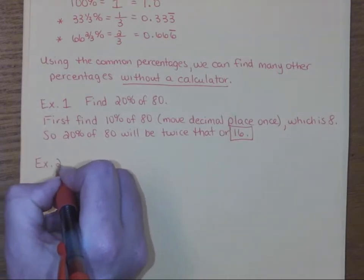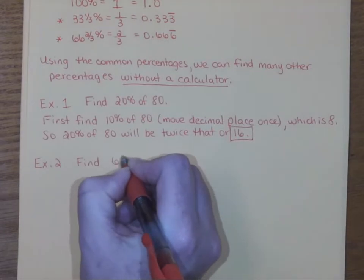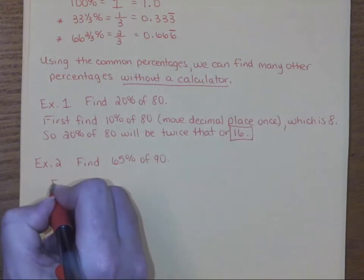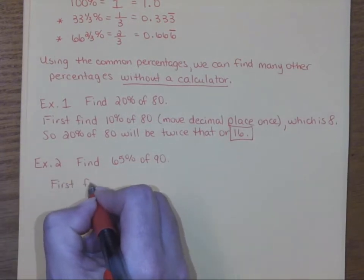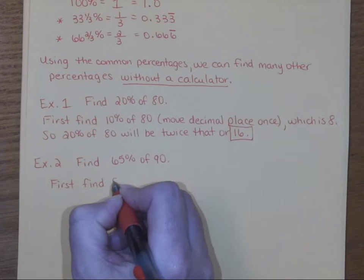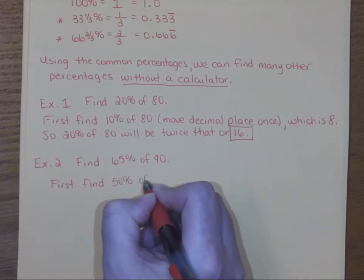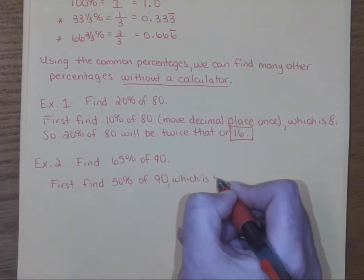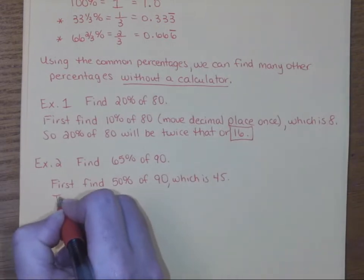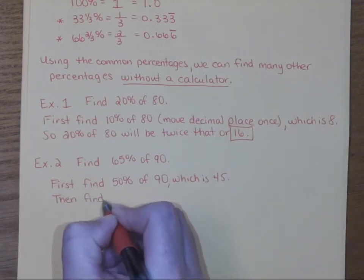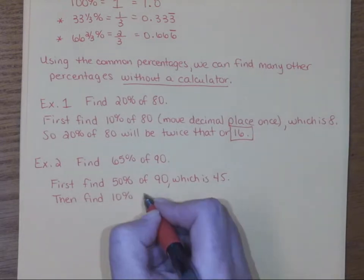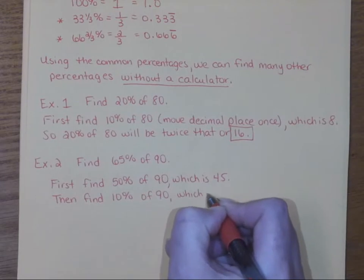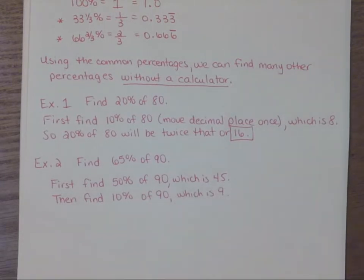What if I told you to find 65% of 90? The first thing I would say is 65% is kind of close to 50%, and I can do 50% in my head. So first find 50% of 90, which is 45 — half. Then we can find 10%. We find 10% by moving the decimal place one. So 10% of 90 is 9. Notice we have 60% accounted for now.